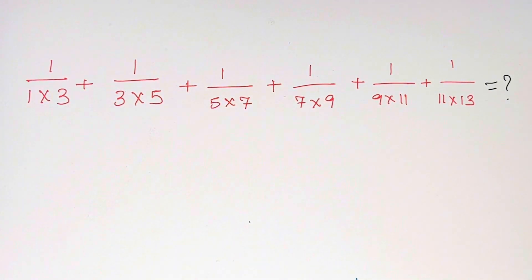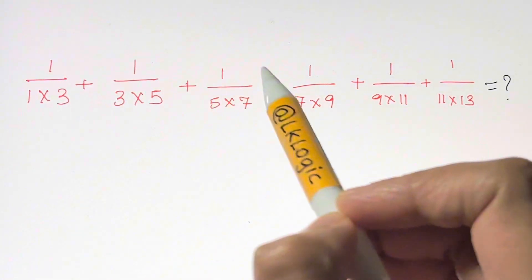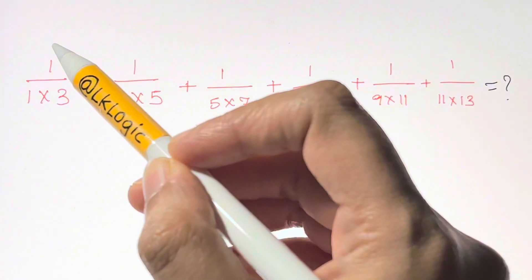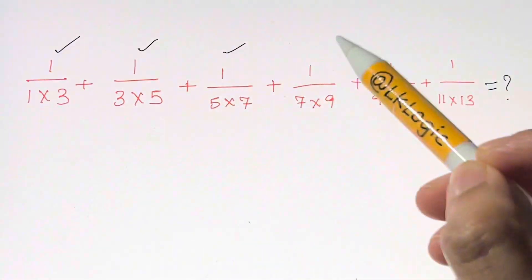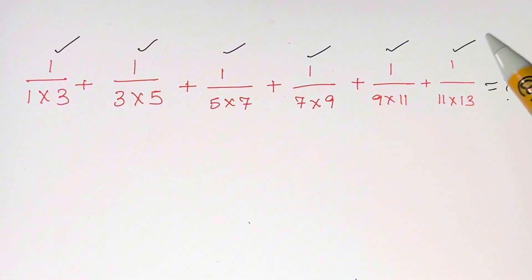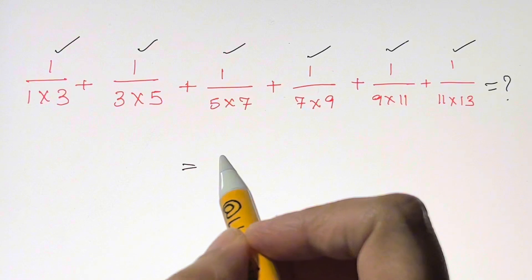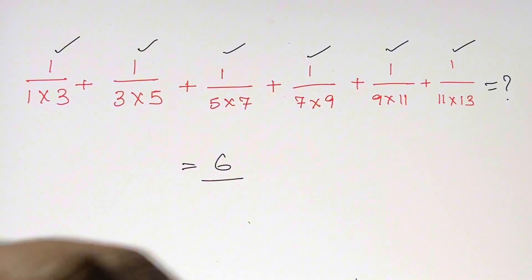I'm going to show you only one step in this. How many ones do you see in the numerator? Let's count them down: one, two, three, four, five, and six. So just write down six divided by...